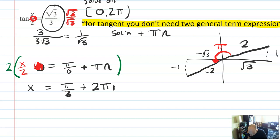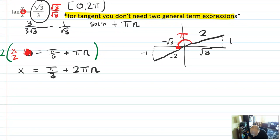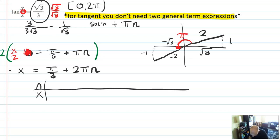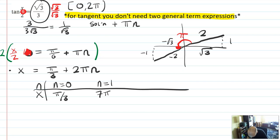I'm almost done. Let me list out my solutions. I only have one equation to work with, which is valuable. In my little t-chart for x and n: if n equals 0, x equals π over 3. If n equals 1, 2π is 6π over 3, so that would be 7π over 3. But wait — I'm already outside my target interval 0 to 2π.